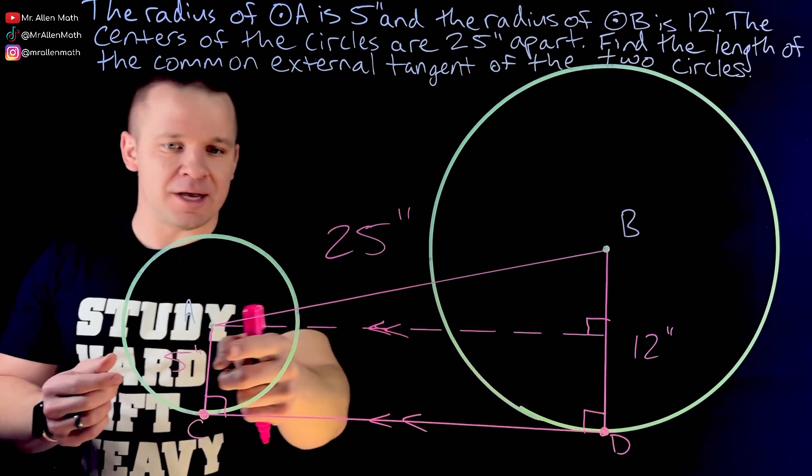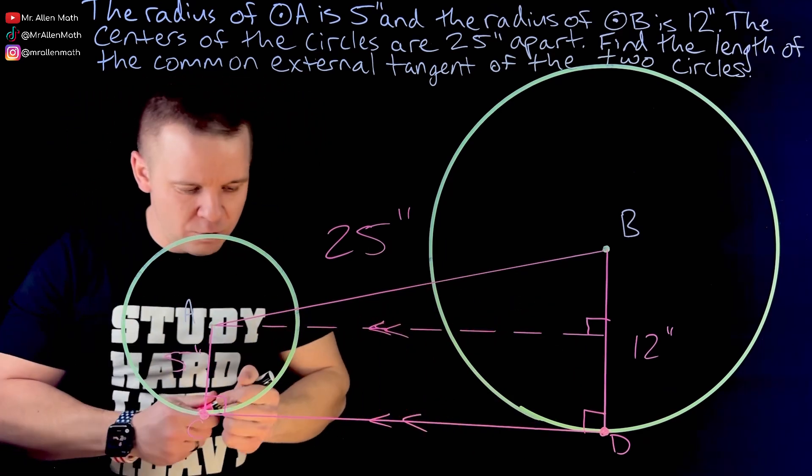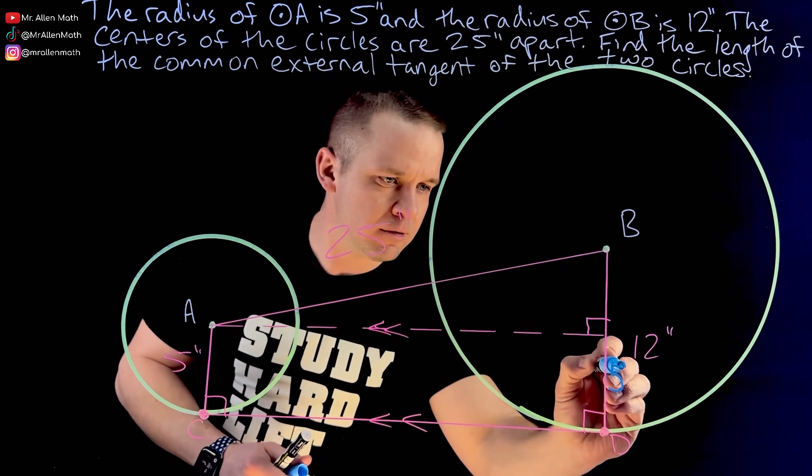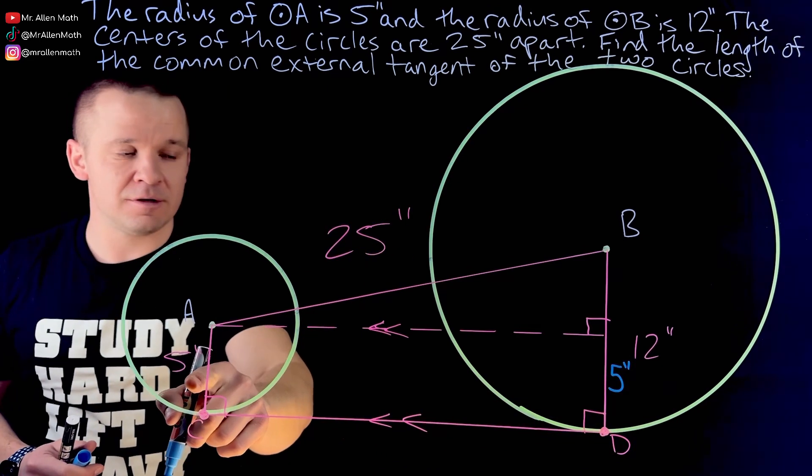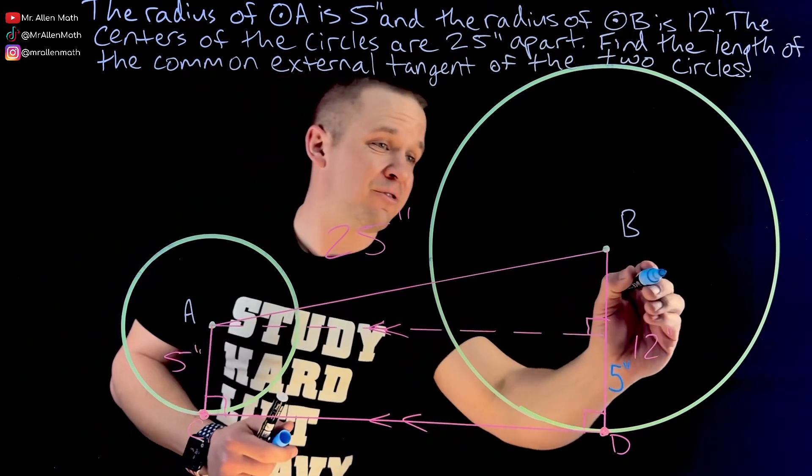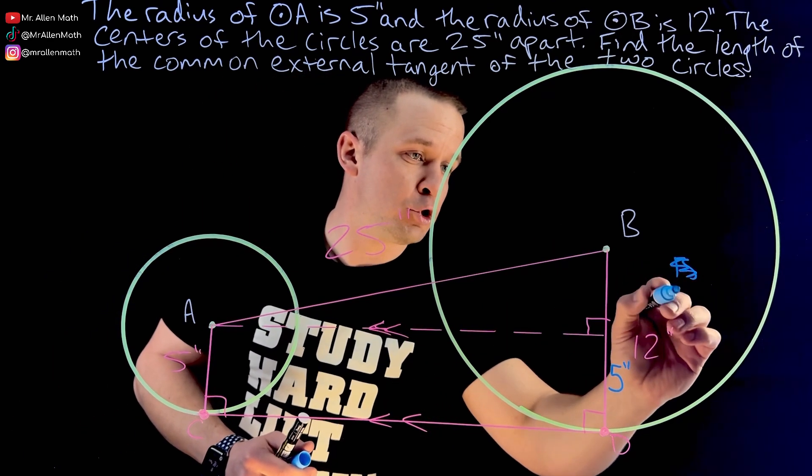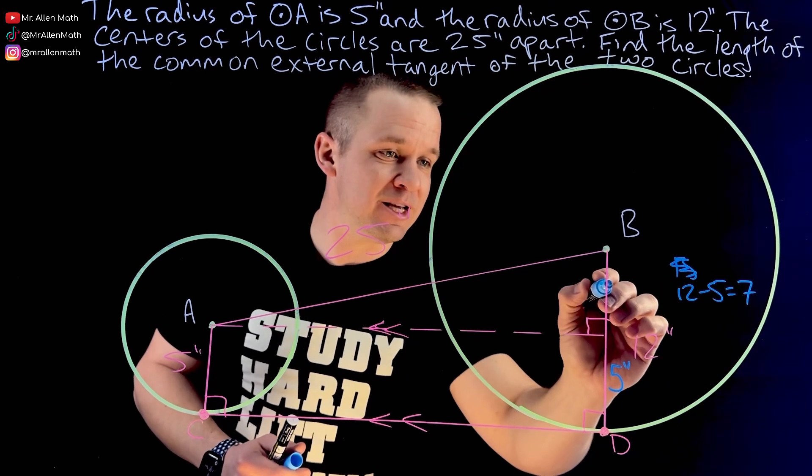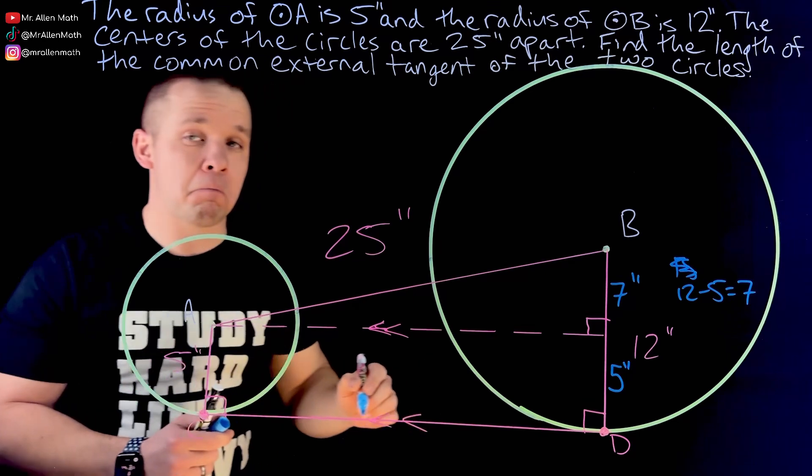Well, the opposite sides of a rectangle are congruent. So wouldn't that make this guy right here five inches? Because this guy's five inches. And if this is five inches and the whole thing is 12, 12 minus five is seven. So this would be seven inches right here.